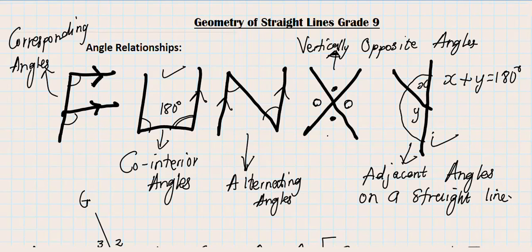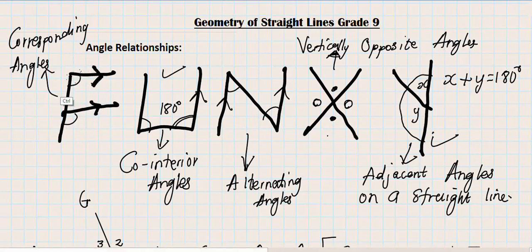Hello guys, I hope you're all well. Welcome back to this concept of geometry of straight lines for grade nine — for those of you who maybe were not listening when the teacher was explaining in class, or maybe if you want to understand more. Last time we spoke about corresponding angles, co-interior angles, alternating angles, and vertically opposite angles.